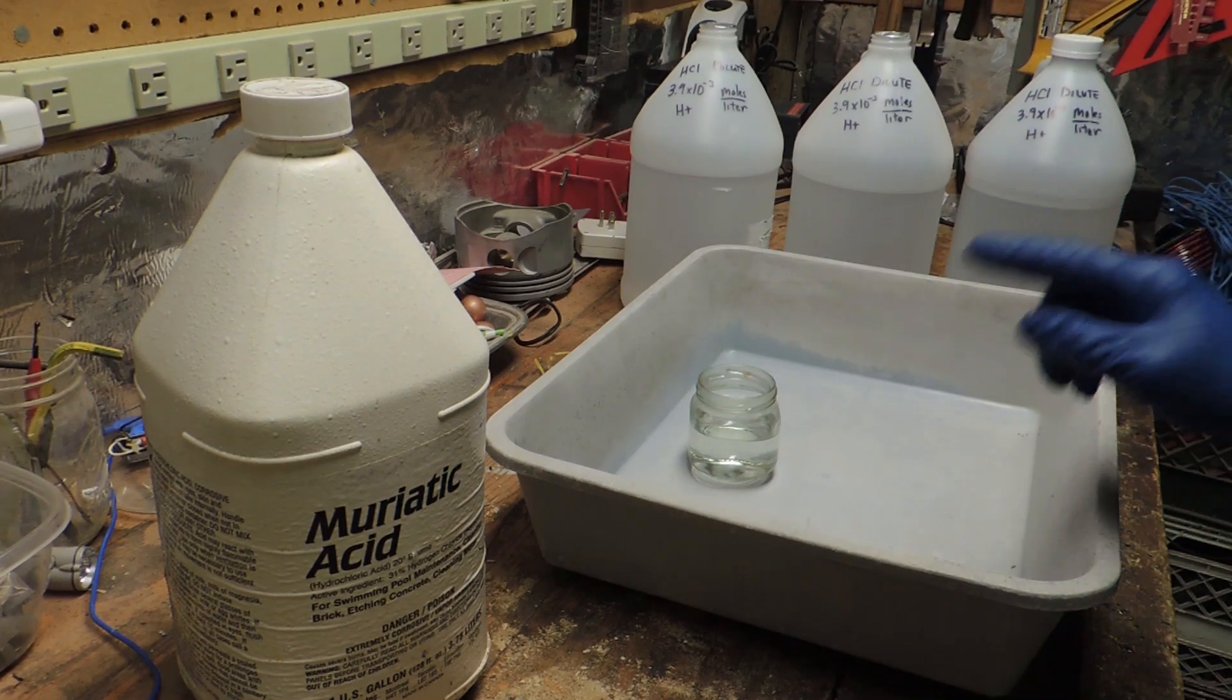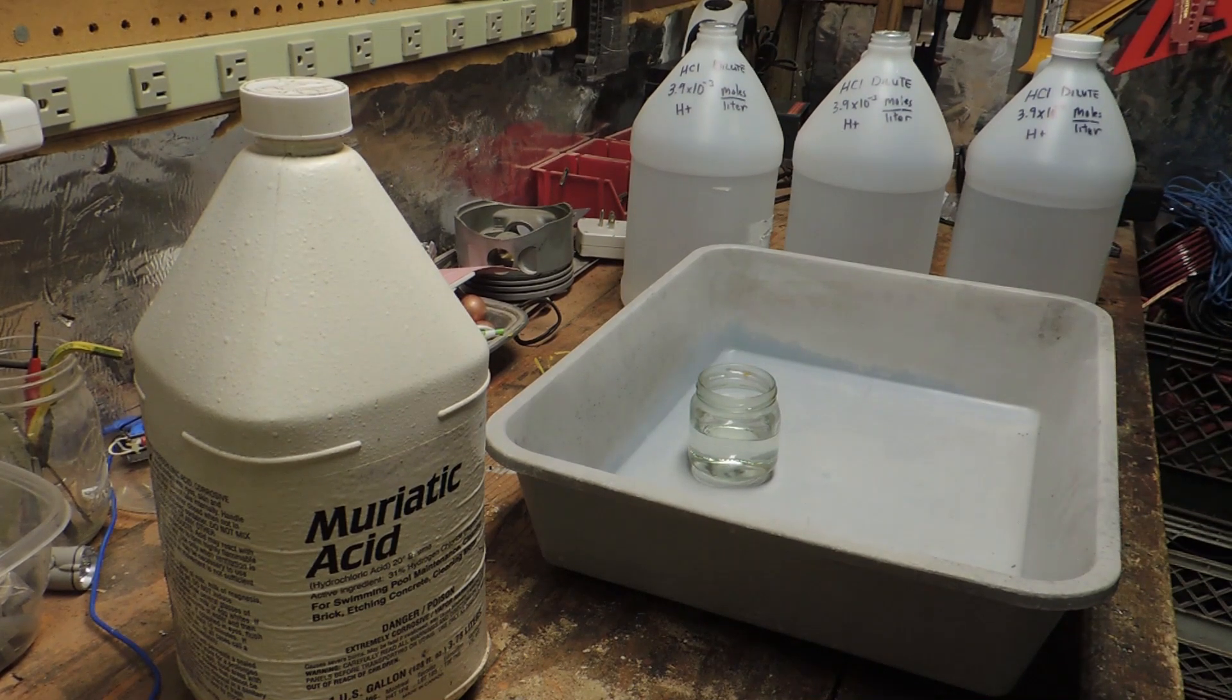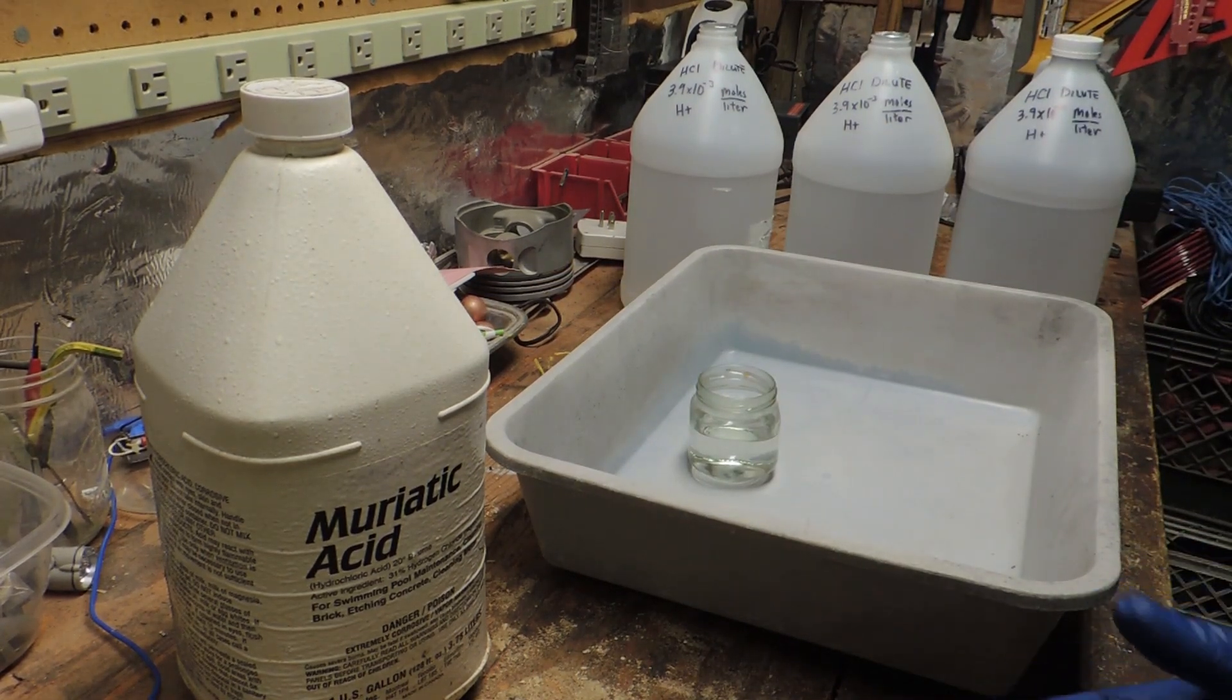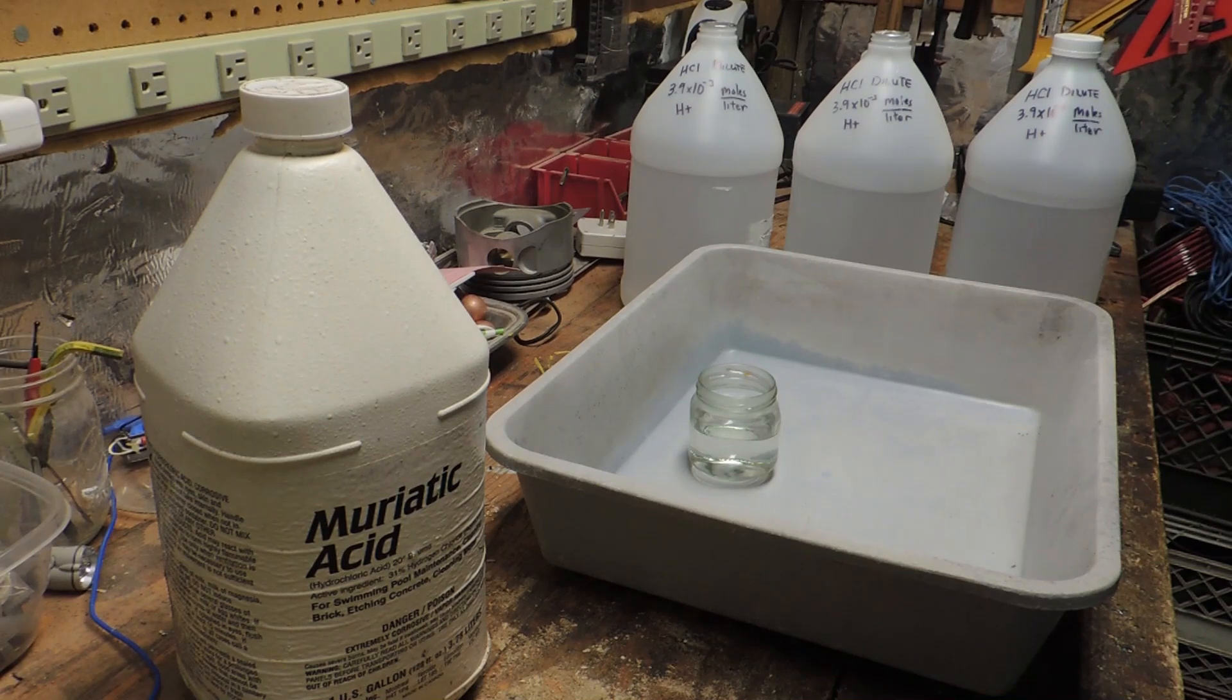But it turns out only 1.5 milliliters of muriatic acid diluted into one gallon of water would get you the same acidic concentration as common acetic acid which is what is in vinegar.